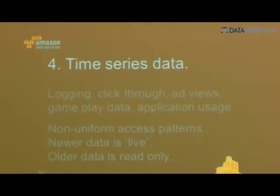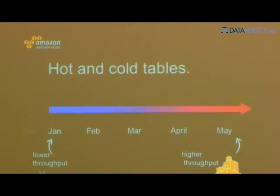For time series data — based on logging, clickstreams, ad views, gameplay, or other analytics use cases — you may have non-uniform access patterns with hot and cold tables. You might have a table for January from eight months ago and a table for today. You'd want high read and write throughput for the current table, and reduce it to minimal levels for January, doing a rolling log and outputting old archives into S3.